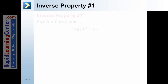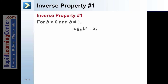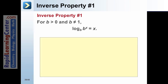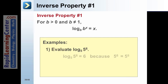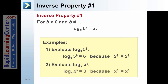Inverse Property Number 1: For b greater than 0 where b is not 1, log base b of (b to the x) equals x. Example 1: Evaluate log base 5 of 5 to the 6th power — this equals 6 because the base is 5 and the answer is 5 to the 6th power, so the exponent must be 6. Example 2: Evaluate log base x of x cubed — log base x of x cubed equals 3 because the base is x and the answer is x cubed, so the exponent on the base must be 3.